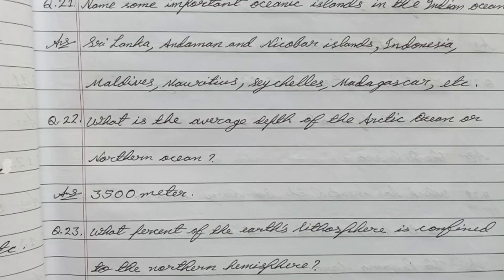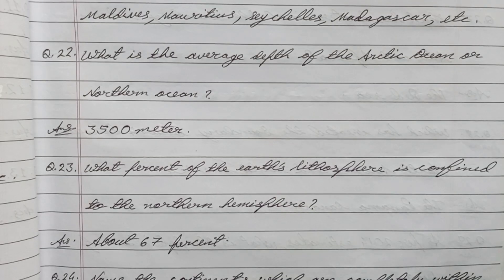Question 22: What is the average depth of the Arctic Ocean? Answer: 3500 meters. Question 23: What percent of the earth's lithosphere is confined to the northern hemisphere? Answer: About 67%.